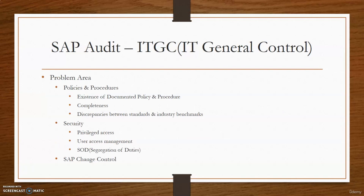Now let's look at the major common problem areas for companies regarding general controls corresponding to SAP. The first is policies and procedures. In the audit cycle, your auditor will ask to see policies and procedures related to specific areas. From an SAP standpoint, the auditor will look at specific SAP configuration settings and processes to ensure compliance with these policies. Before digging into SAP specifics, the auditor will check for the existence of documented policies, completeness within those policies, and any obvious discrepancy against industry benchmarks.